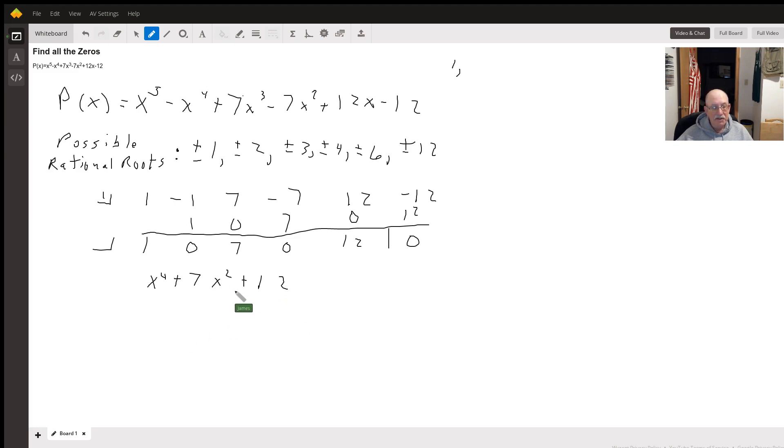I got x to the 4th plus 7x squared plus 12. Okay, well this will factor. I'm going to set that equal to 0. I get x squared plus 3 times x squared plus 4 equals 0.